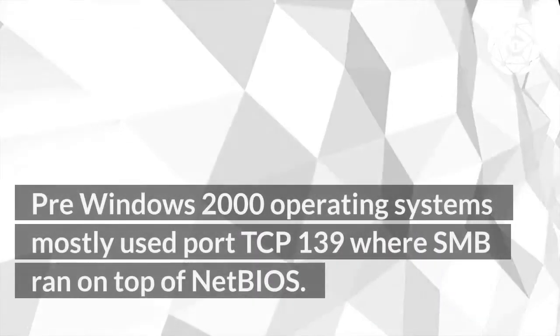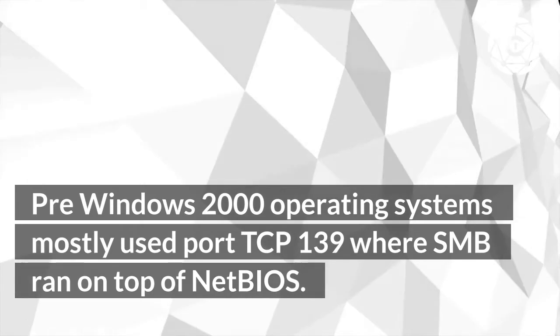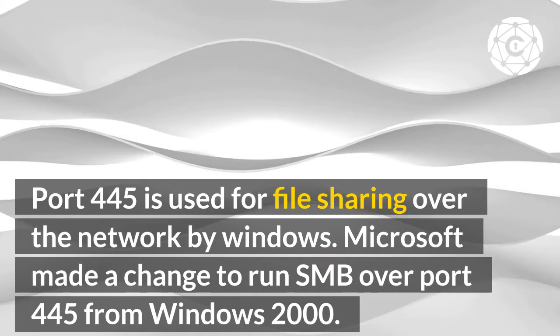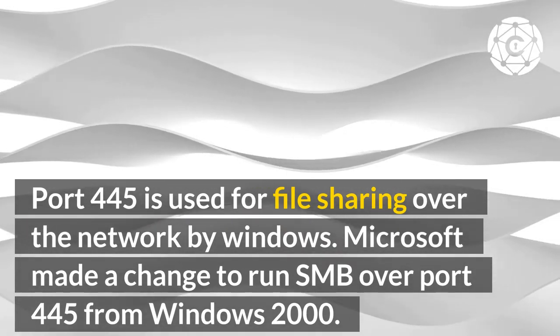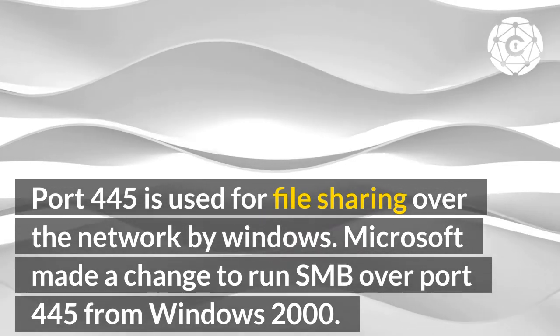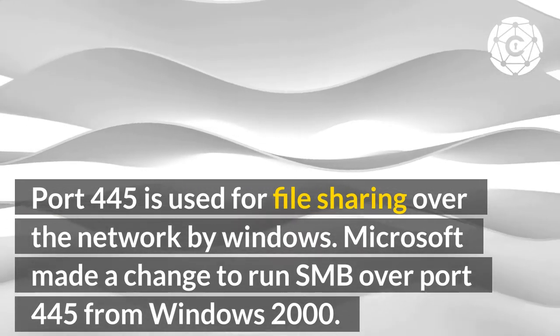What are ports 139 and 445? Pre-Windows 2000 operating systems mostly use port TCP 139 where SMB ran on top of NetBIOS. Port 445 is used for file sharing over the network by Windows. Microsoft made a change to run SMB over port 445 from Windows 2000.